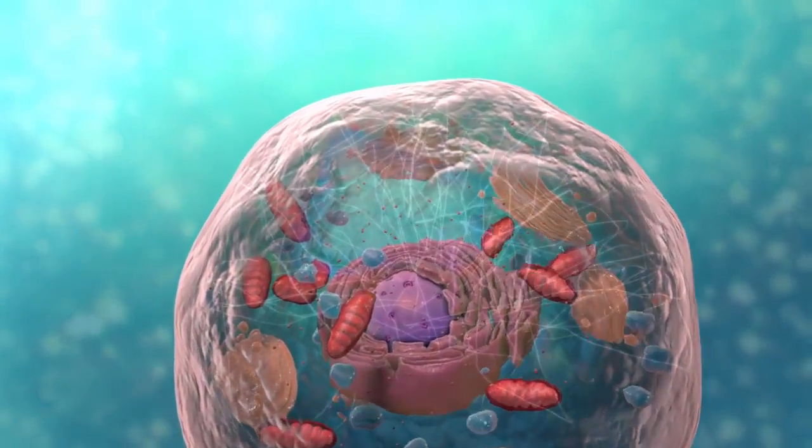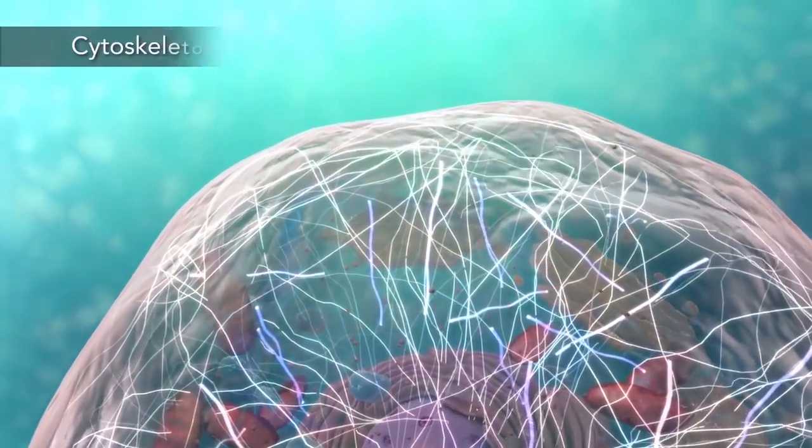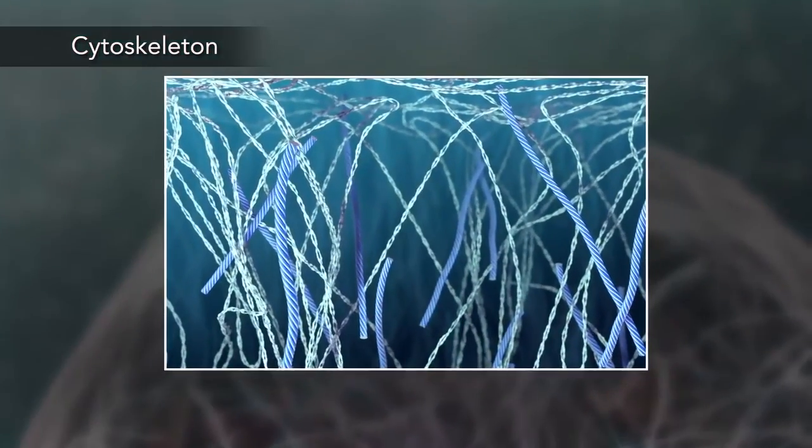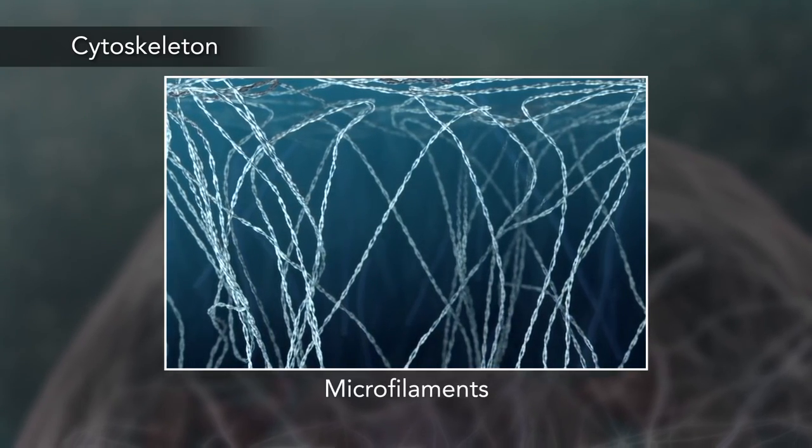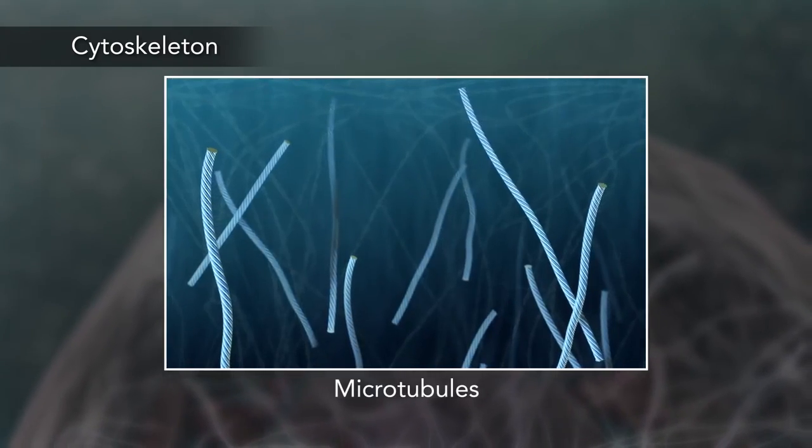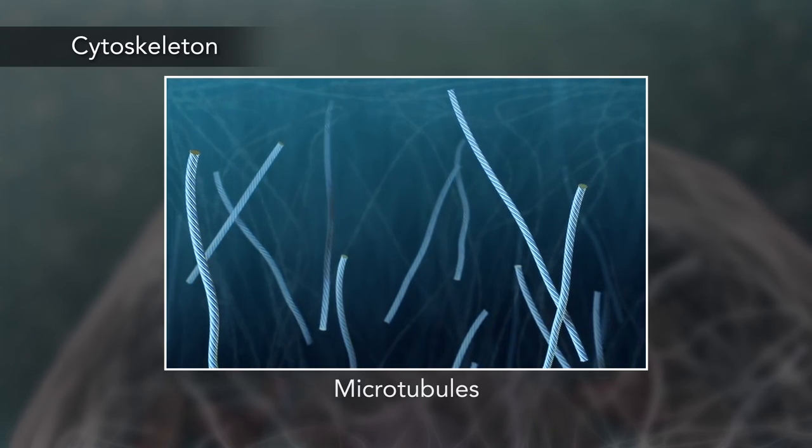Meanwhile, the cell maintains its shape through a cytoskeleton. The cytoskeleton includes the thread-like microfilaments, which are made of protein, and microtubules, which are thin, hollow tubes.